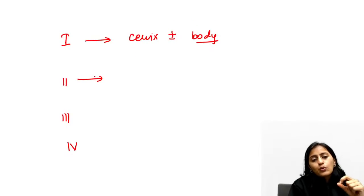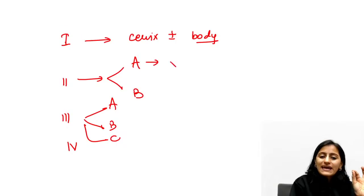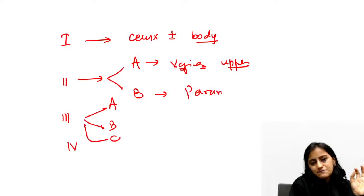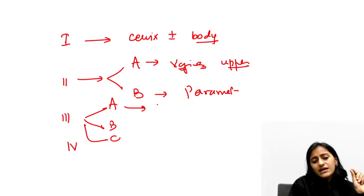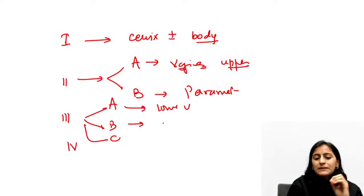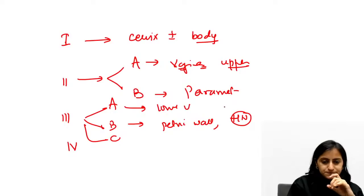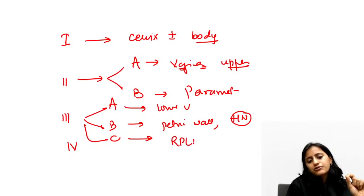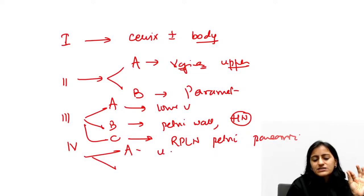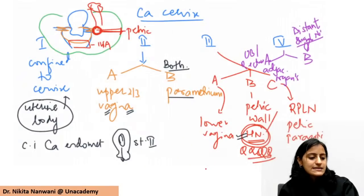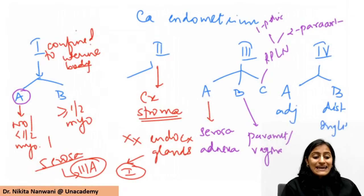Summary of ca cervix staging: Stage 1 - confined to cervix, with or without uterine body involvement (does not change stage). Stage 2A - upper two-thirds vagina; 2B - parametrium involvement, not reaching pelvic wall. Stage 3A - lower vagina; 3B - pelvic wall involvement and ureter causing hydronephrosis; 3C - retroperitoneal lymph nodes (pelvic and para-aortic). Stage 4A - adjacent organs (urinary bladder, rectum) biopsy proven; 4B - distant metastasis or inguinal lymph nodes.